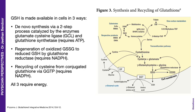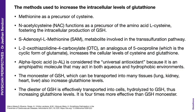Glutathione is made available in cells in three ways: de novo synthesis, where the cell itself makes glutathione from the amino acids glycine, cysteine and glutamic acid; recycling of oxidized glutathione back to the reduced form; or recycling of cysteine. Importantly, all these steps require energy. To facilitate intracellular glutathione, we can give methionine as a precursor of cysteine, or NAC — N-acetyl cysteine — to increase glutathione levels, or SAM, OTC, or even glutathione directly as a monoester, diester or newer forms.